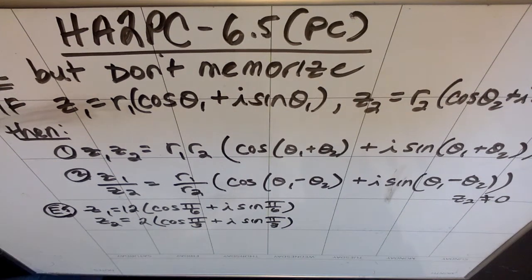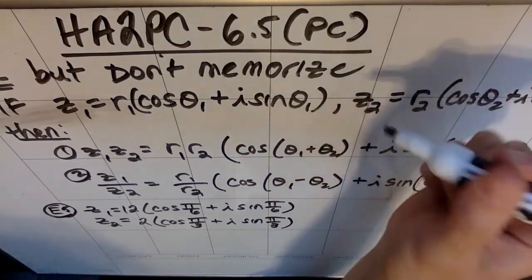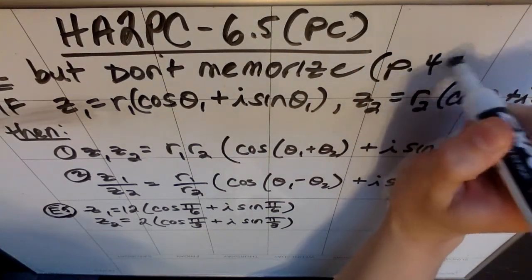This is honors algebra 2 pre-calculus. We're doing 6.5 from the pre-calc book, which is the trigonometric form of complex numbers. So there are two formulas on page 451 in the textbook.